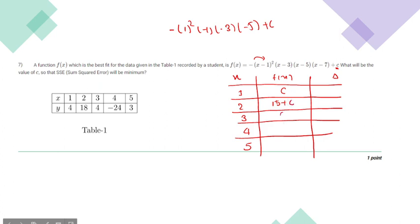Similarly for 3, it will become c. For 4, it will become negative times (4 minus 1), that will be 3, times 1, negative 1, and negative 3, plus c. Negative times negative will become positive, so 27 plus c. For 5, it will be equal to c.